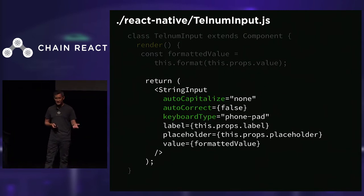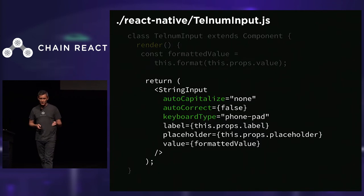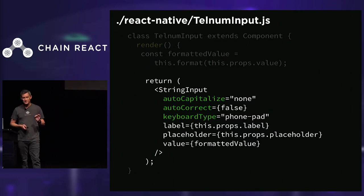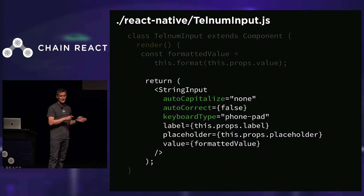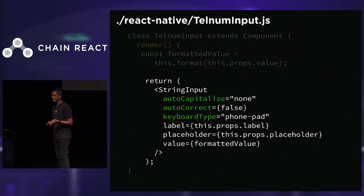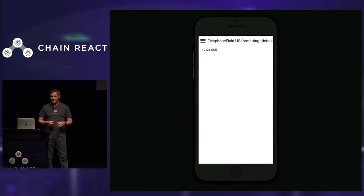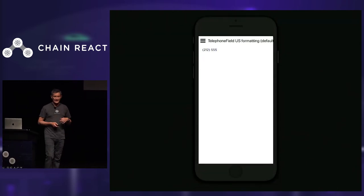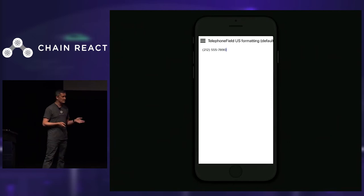Within our render function, we call the format function from our shared business logic — because it's shared, it works the same regardless of which platform it's running on. We return the string input field configured specifically for mobile. There are a few mobile-specific props: autocapitalize, autocorrect, and keyboard type — and only this platform-specific implementation needs to know about these properties. Here's the component running in a storybook — as I type, it formats the number just as expected.